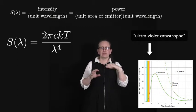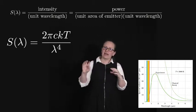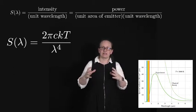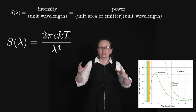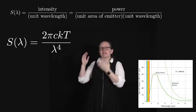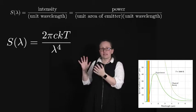You can see from the form of our equation as λ gets smaller and smaller, we expect this spectral radiance to just continue getting bigger and bigger. And experimentally this doesn't happen.